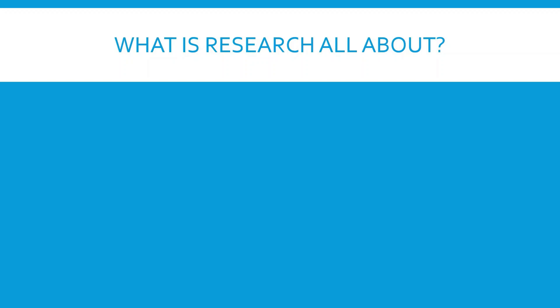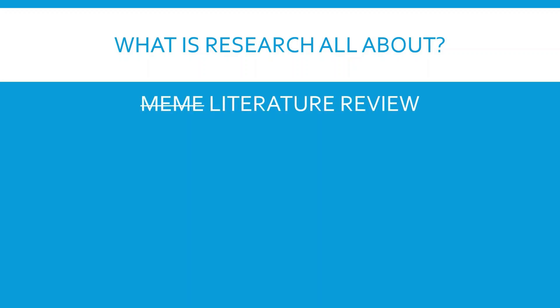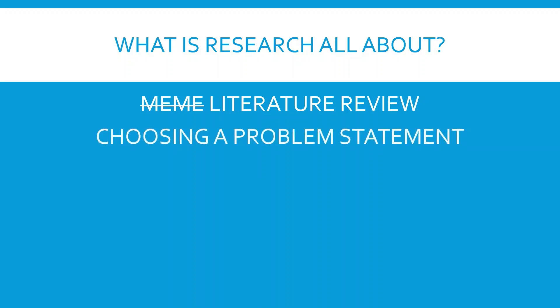Coming back to what the vlog is all about, I'll tell you all what research is. Research has basically four main steps. The first step being literature review. Literature review basically consists of reading papers, books, and cases so that you get more perspective of the field. The next step is choosing a problem statement, where you identify something that is lacking in the field and then you choose to make it your problem statement.